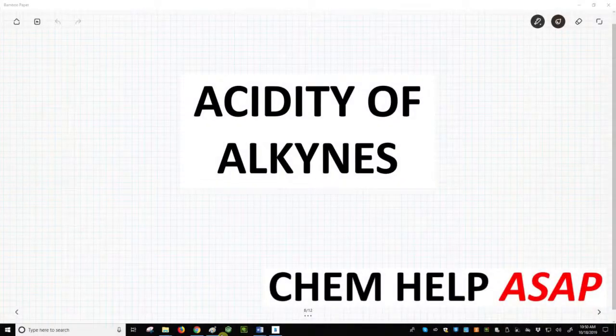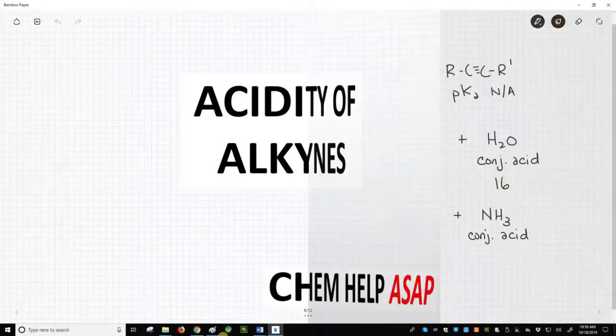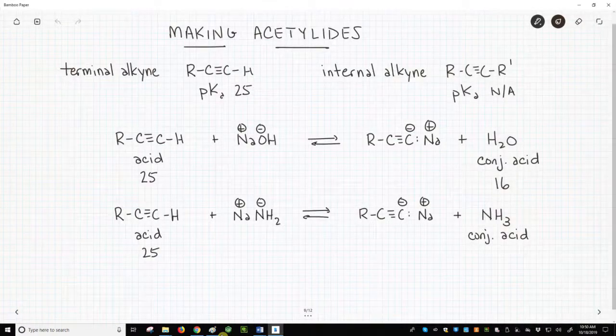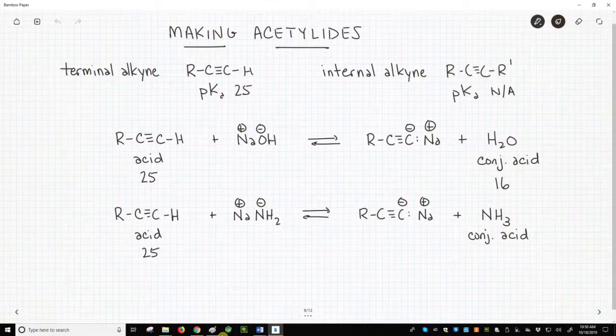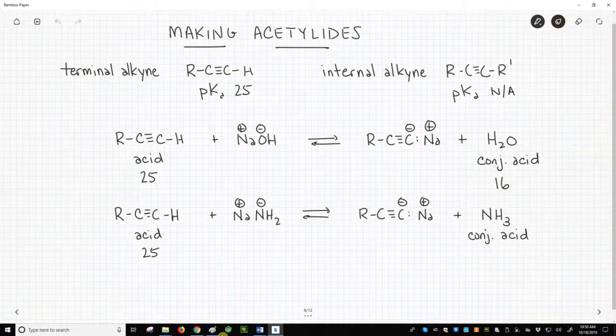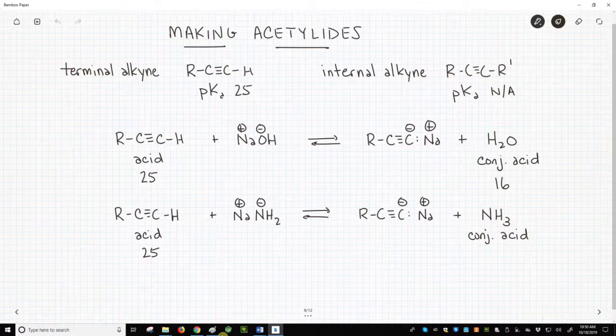Good day from ChemHelp ASAP. Let's talk about the acidity of alkynes. In another video, in a different playlist, we have briefly discussed the acidity of alkynes. This acidity applies to the CH of terminal alkynes. The CH has a pKa of around 25.